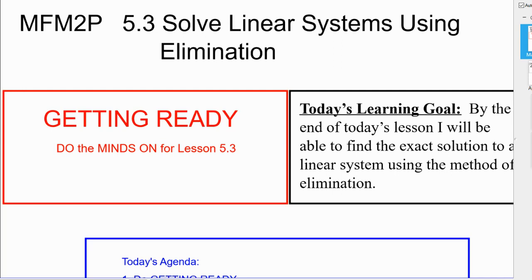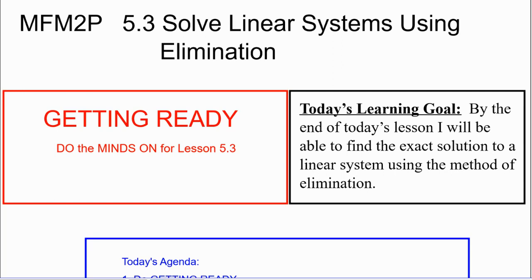A quick recap: a linear system is when two or more lines are interacting. They usually cross at some point — unless they are parallel — and wherever they cross is called a solution. We have learned how to solve it by graphing, then by substitution, and today we are learning by a skill called Elimination.